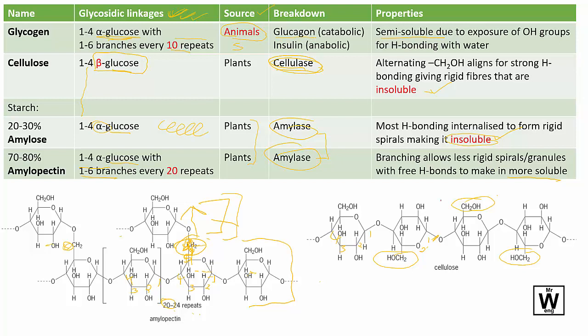For glycogen, hormones control its breakdown and synthesis. When blood glucose is low, the glucagon hormone tells your body to take the glycogen in the liver and break it down to glucose. When blood glucose is high after a meal, insulin signals your body to take up glucose from the blood and convert it into glycogen for storage.